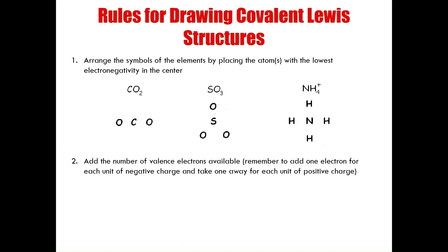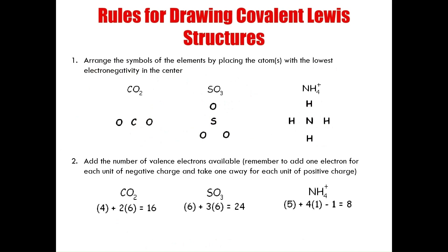The second rule is to add all available valence electrons together. Remember to add one electron for a negative charge on your compound, and remove one electron for a positive charge. For carbon dioxide, carbon has four valence electrons and each oxygen has six, so two oxygens gives 12 — a total of 16 electrons. For the ammonium ion, instead of nine electrons from addition, I subtract one for the positive charge, leaving eight electrons to work with.